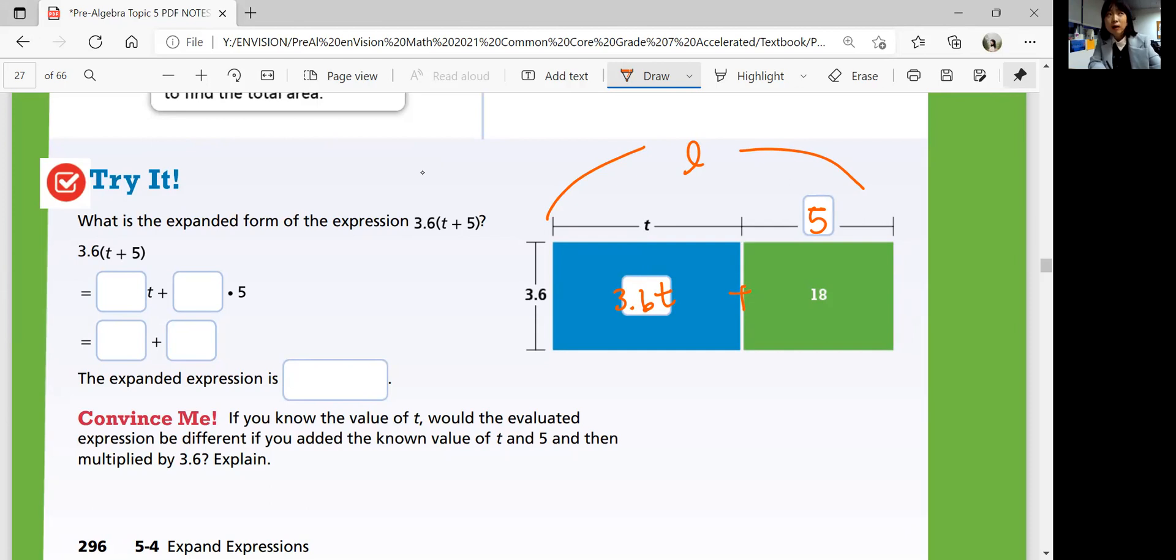So looking at the algebra, you can use the distributive property to say 3.6t plus 3.6 times 5 is equivalent. And simplify, you get 18. So the expanded expression is 3.6t plus 18.